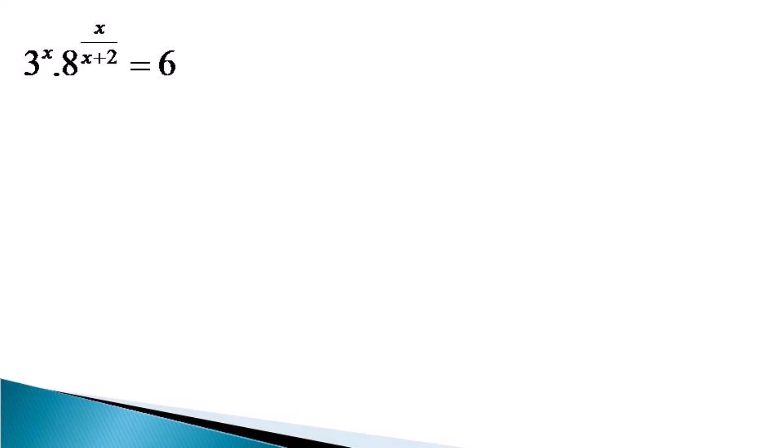To solve this equation, the first thing we do is represent the numbers in their prime factors. So 8 on the left hand side can be represented as 2 cubed, and the left hand side becomes 3 raised to the power x into 2 cubed raised to the power x over x plus 2, which becomes equal to 3 into 2, since 6 is represented as 3 into 2.